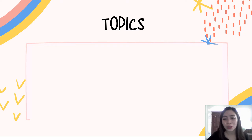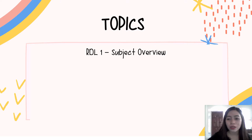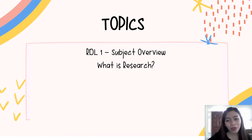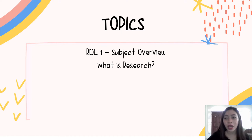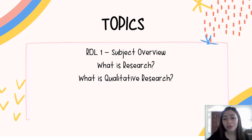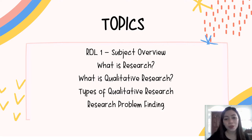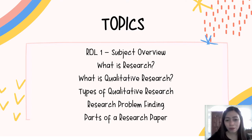For this video orientation, we are going to discuss the following topics. First, let's see what's in store for this subject in Research in Daily Life 1 for the second semester of this school year. Next, let's discuss what is research, its importance, and the ethics in research. Then, what is qualitative research and its types, finding some research topics, and lastly, learning the parts of a research paper.